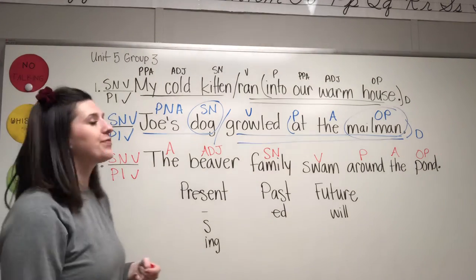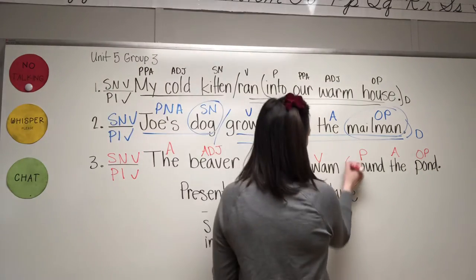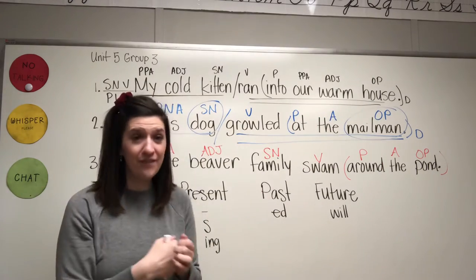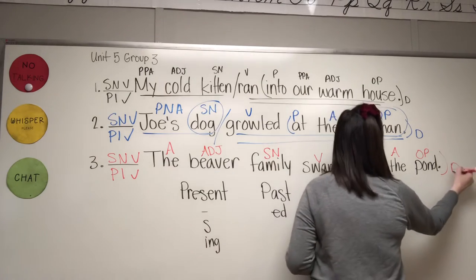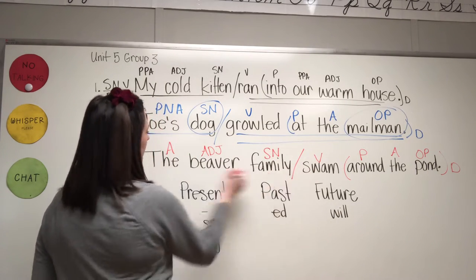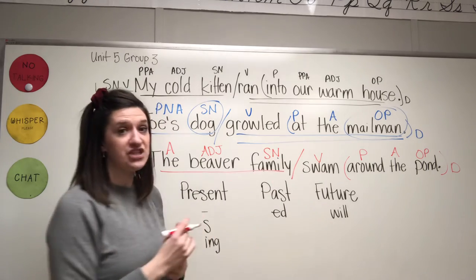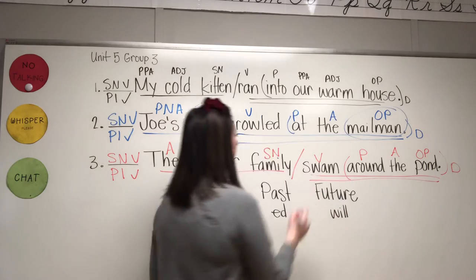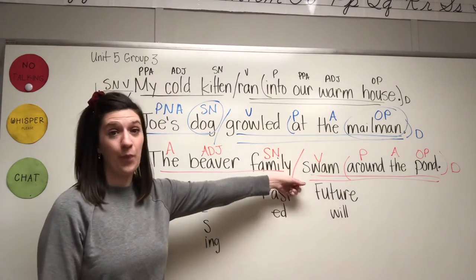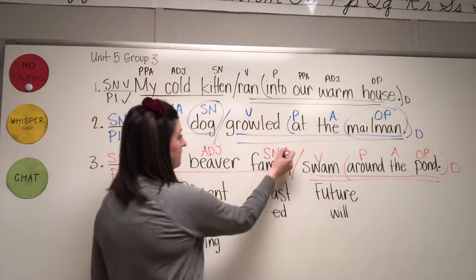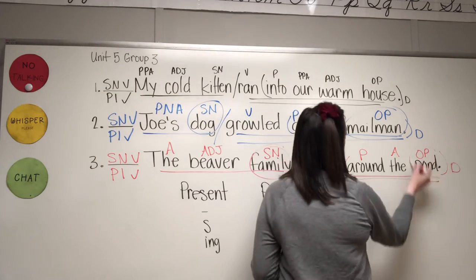Around the pond. Prepositional phrase. Period. Statement. Declarative sentence. Go back to the verb and divide the complete subject from the complete predicate. Family swam. And our two nouns are family and pond. All right.